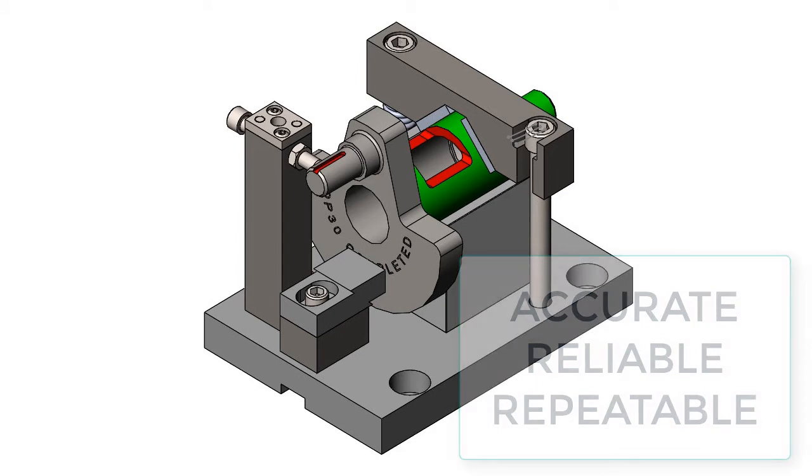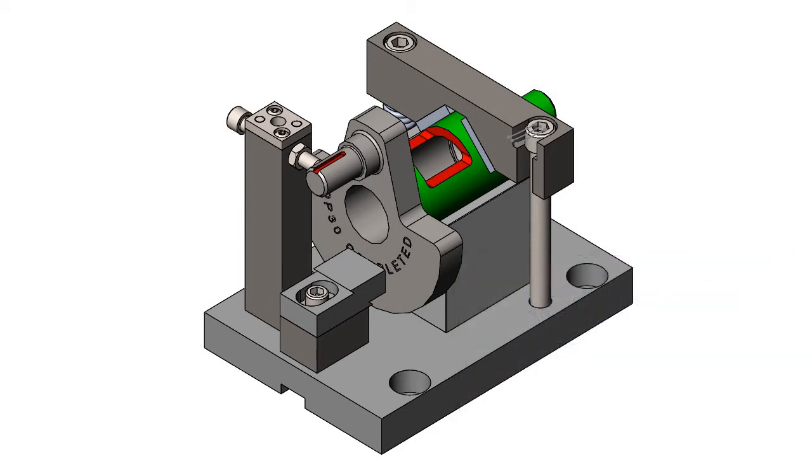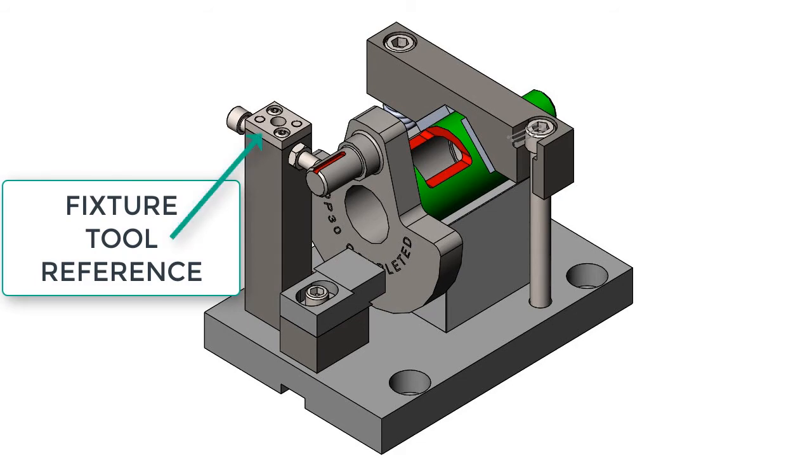The critical difference between a jig and a fixture is that a jig guides the cutting tool, typically through a drill bushing, and a fixture merely references the cutting tool.